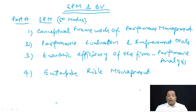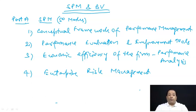In SPM — Strategic Performance Management and Business Valuation — the first part, Strategic Performance Management, contains 50 marks, and Business Valuation also contains 50 marks. In Strategic Performance Management, the first chapter is the conceptual framework of performance management.